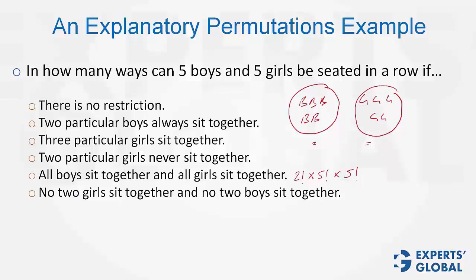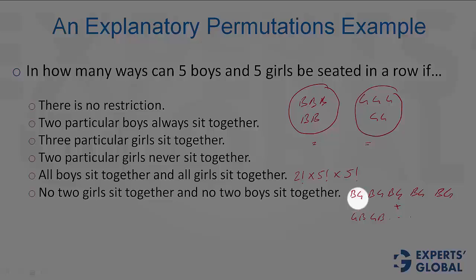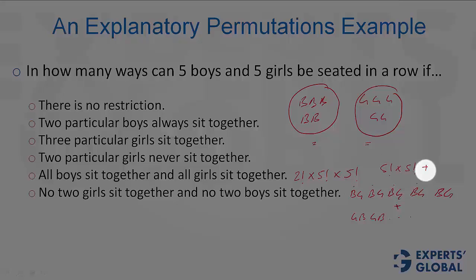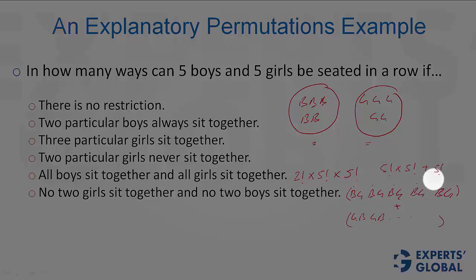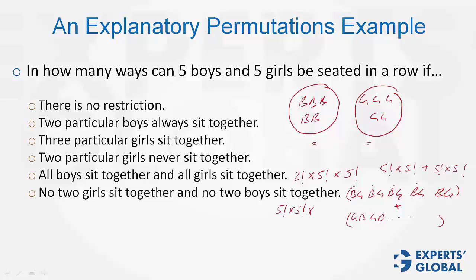The next case is very interesting — girls and boys take alternate positions. Either boy-girl-boy-girl or girl-boy-girl-boy. In the first arrangement, boys have 5 choices so 5 factorial ways; girls also have 5 choices so 5 factorial. Remember: 'or' means plus sign, and 'and' means multiplication sign. We have 'or' here, which means addition. In the second case, girls can be arranged in 5 factorial ways and boys again in 5 factorial. So the answer is 5 factorial times 5 factorial times 2 — and not 2 factorial. Although the value is the same, calling it 2 factorial would be conceptually incorrect.